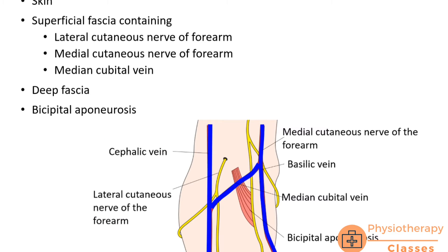The structures forming the roof of cubital fossa lie superficial to this triangular intermuscular space. From superficial to deep: the most superficial structure is skin. Once we remove the skin, we find superficial fascia. In the superficial fascia we have cutaneous nerves and superficial veins — so in this region we find two cutaneous nerves of the forearm and a vein.